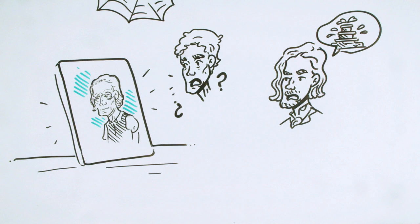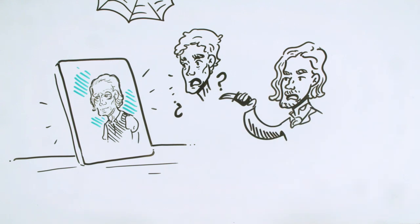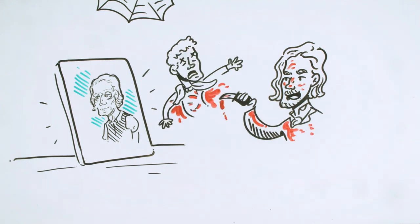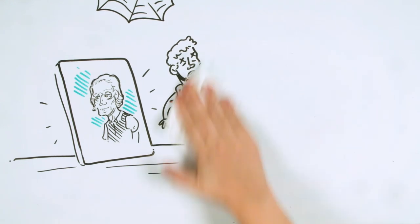Basil begs Dorian to repent, but the young man tells him it's too late. Full of hatred against Basil, Dorian stabs the artist to death. And after making sure no one has heard him, he hides Basil's things and leaves the room.